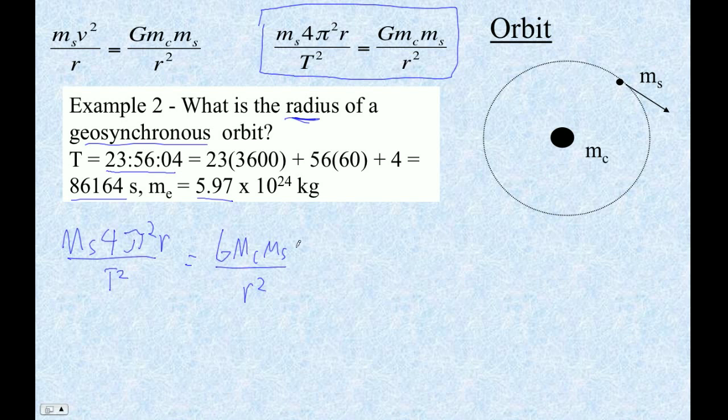The first thing we do is we cancel out the satellite mass. Then we cross-multiply, so we go 4π²R times R² is 4π²R³. So these R's do not cancel. Everybody likes to cancel them, but they don't. And then that equals Gm_cT².